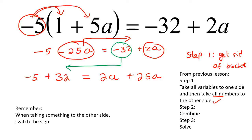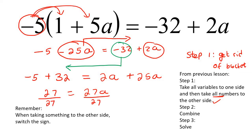Now step two: combine everything. So minus five plus 32 is 27. And then 2a plus 25a is 27a. What we would do now is divide by 27, because you want these two to cancel out so that you can get a by itself. But then we also have to do the same on the other side — 27 divided by 27 gives us one. So the final answer would be a is equal to one.